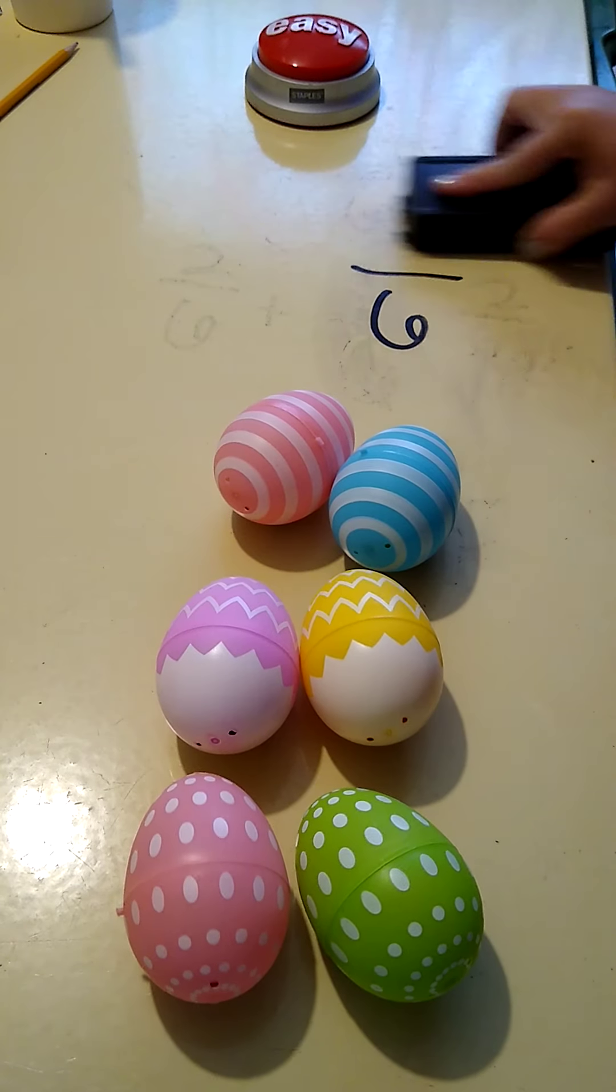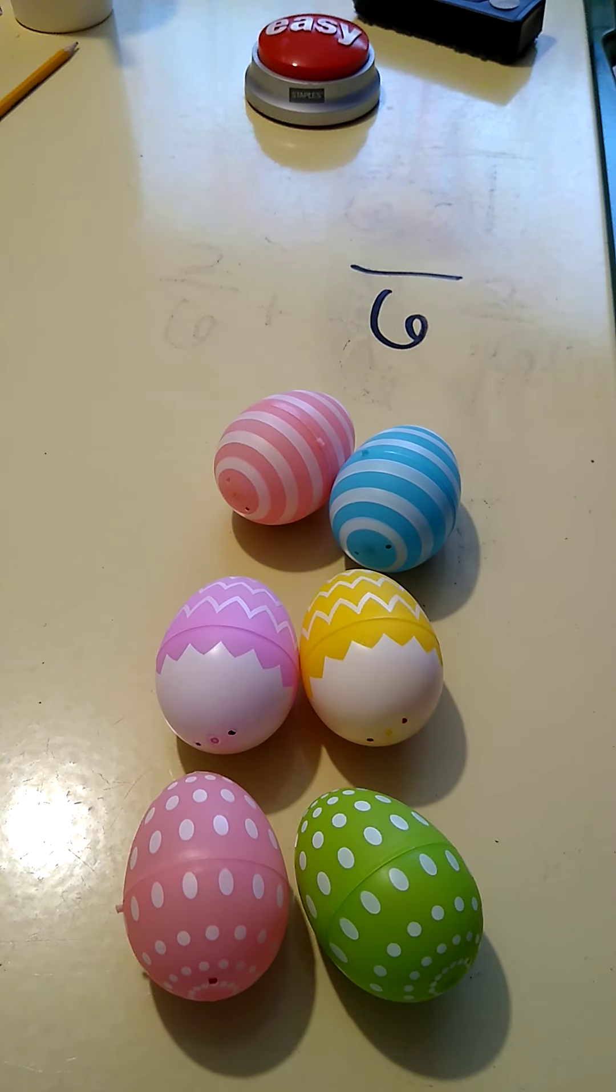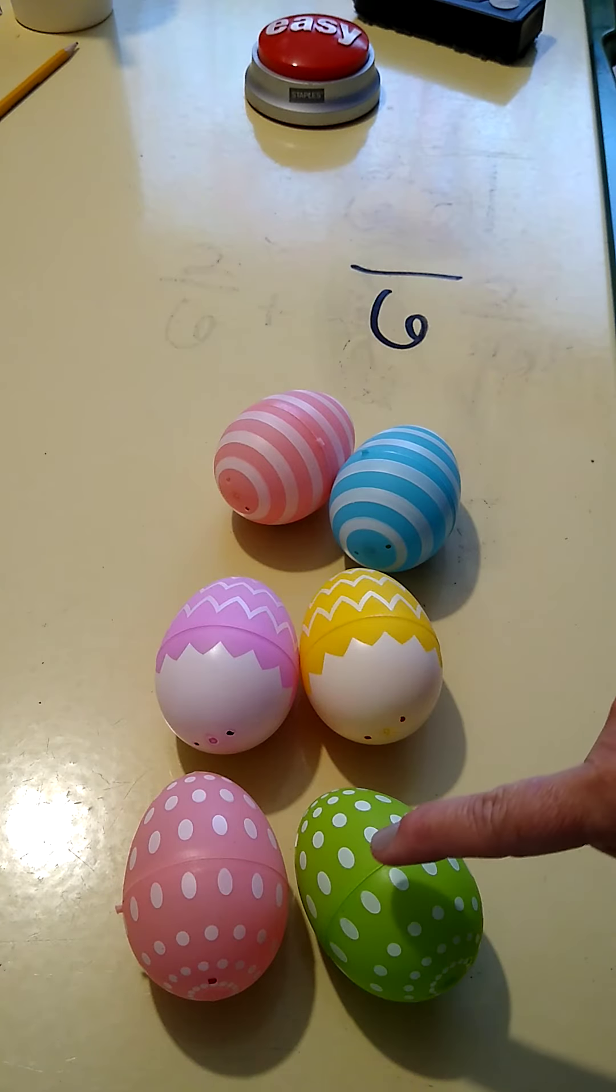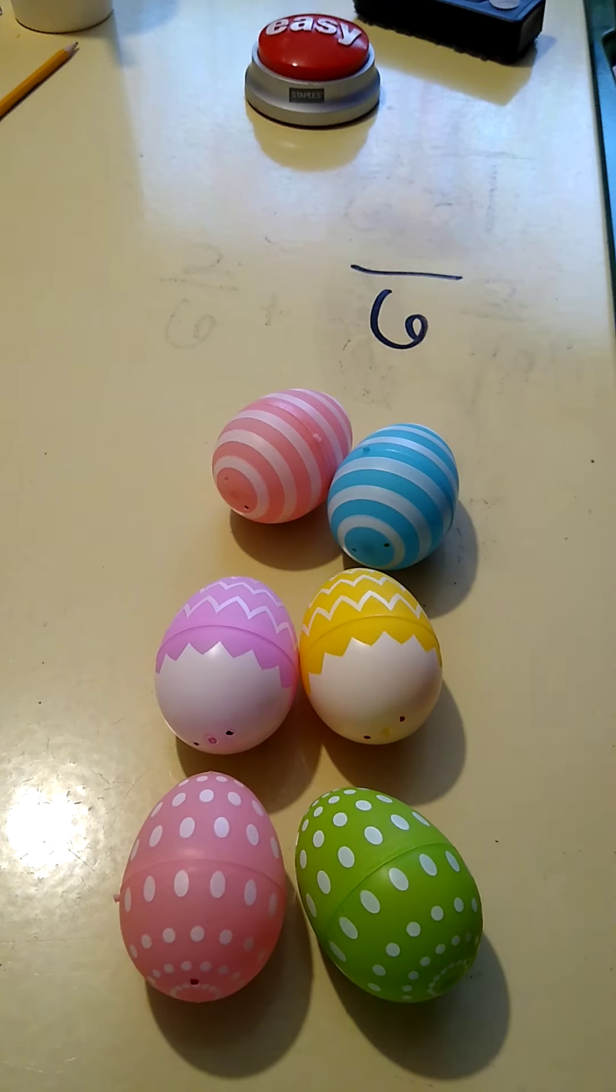Now I'm going to see if I can trick you. What fraction of eggs are not yellow? How many is yellow? One. So what fraction is not yellow? I have one, two, three, four, five out of six. Five-sixths of these eggs are not yellow.